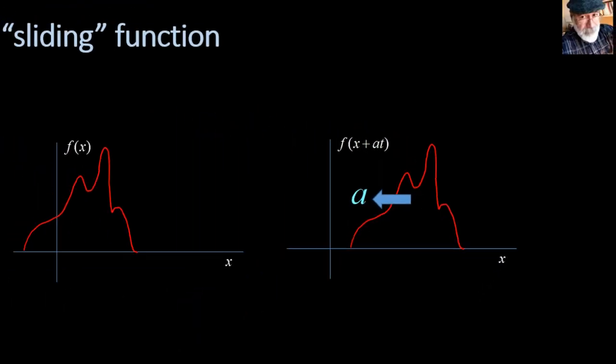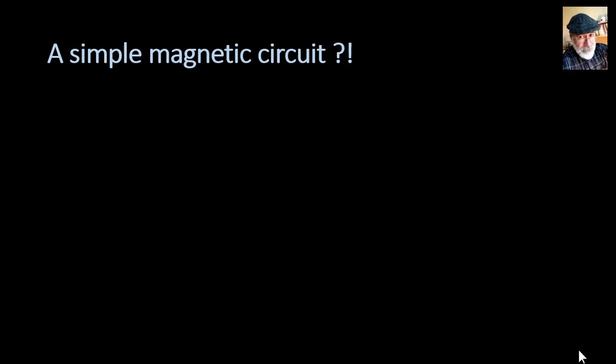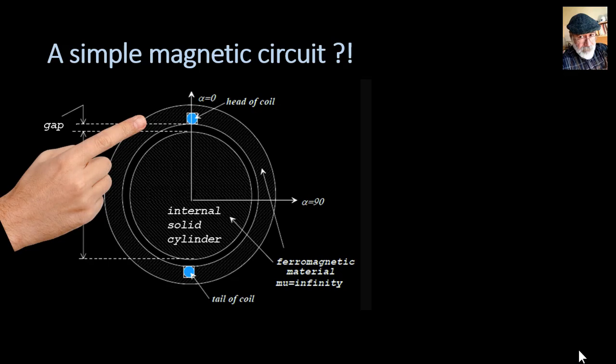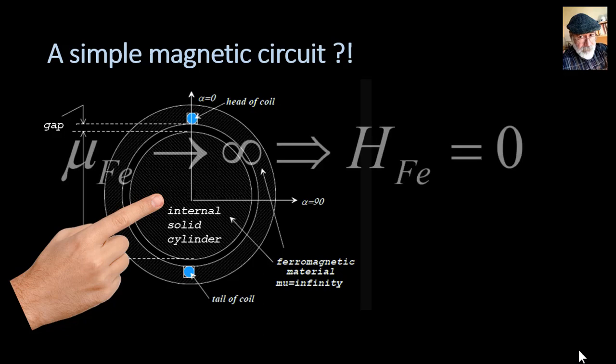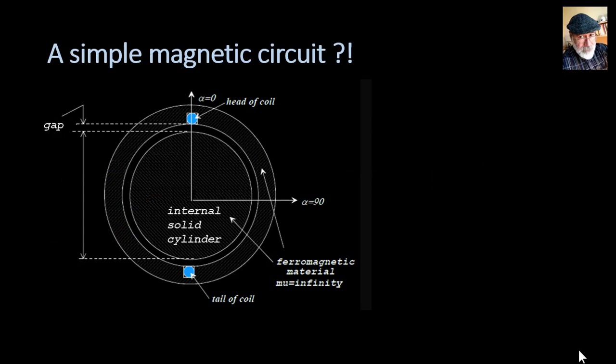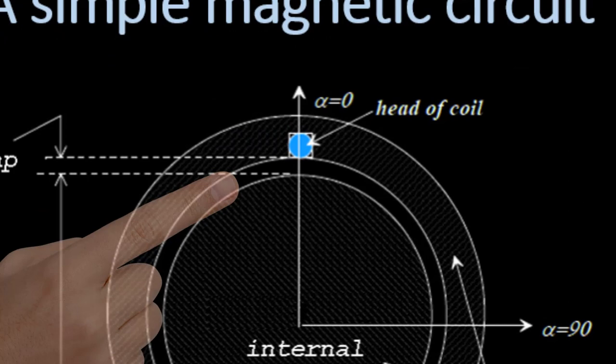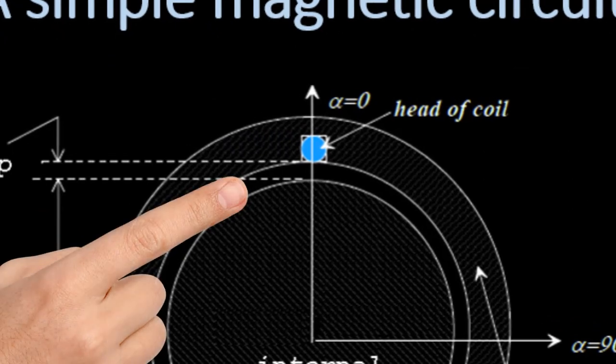Now it's time we go to the simple magnetic circuit we saw at the beginning of our course. A hollow iron cylinder, ideal iron with infinite magnetic permeability which signifies zero magnetic field. H is zero. There is no magnetic potential drop in that iron. And there is a small air gap, delta naught in length, separating both.